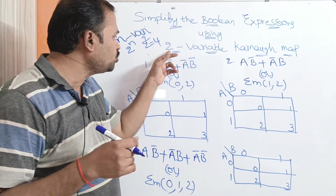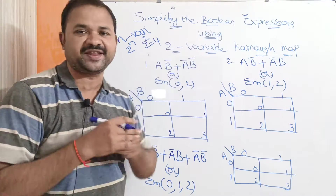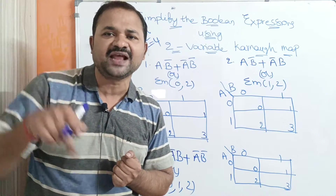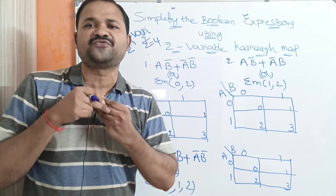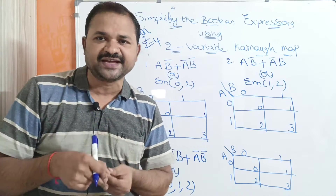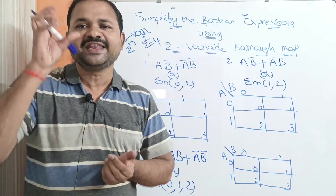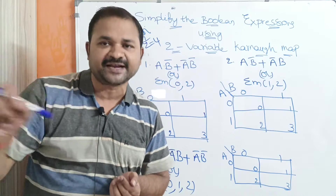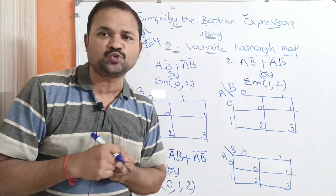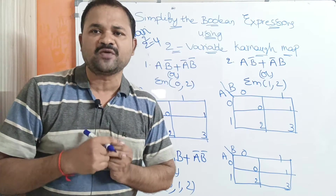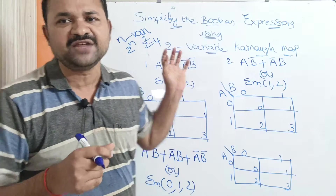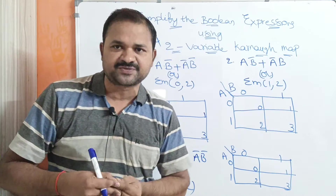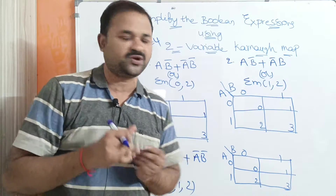Here, the n-value is 2, so 2 to the power 2 means we will have four cells or four squares. Totally we will have 2 to the power n minterms, and since n equals 2, that gives us four minterms for a two-variable expression.